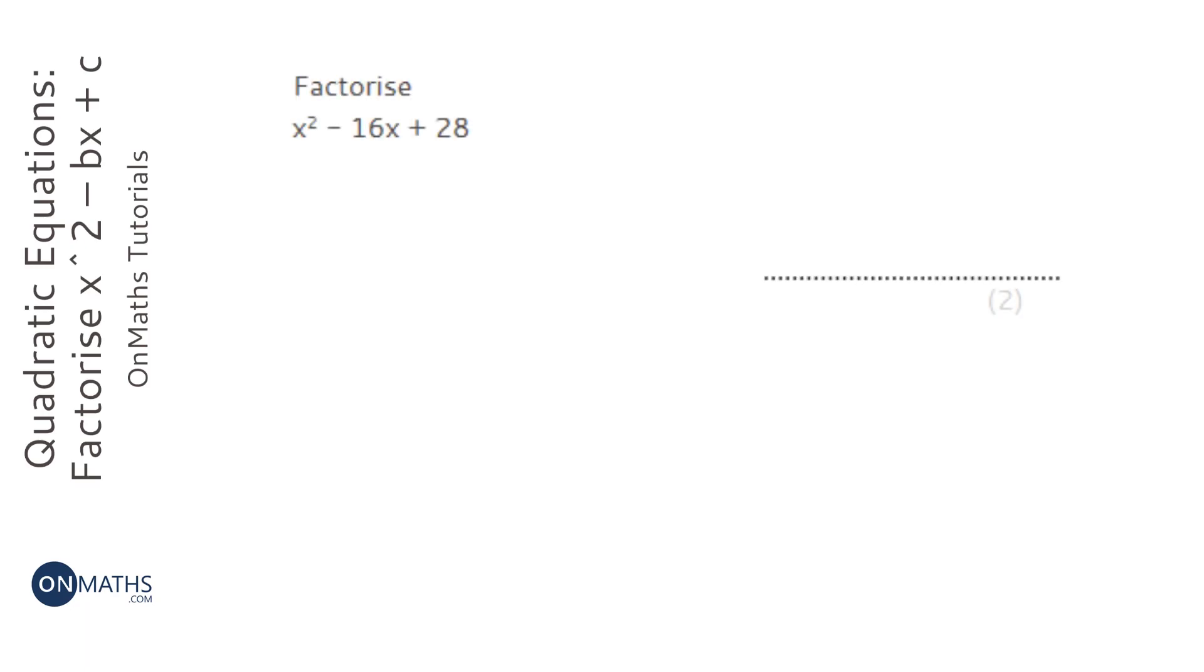We're asked to factorise, which means put this into brackets. The first thing I would do is put a set of brackets down. It's a quadratic because there's an x squared, an x, and a number term.